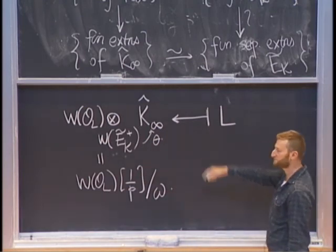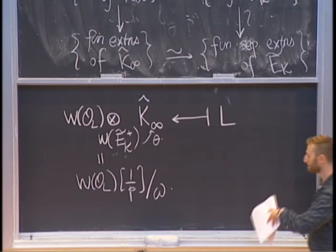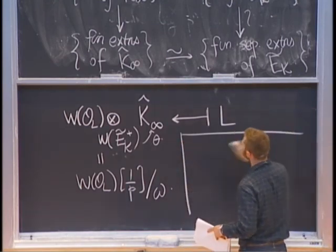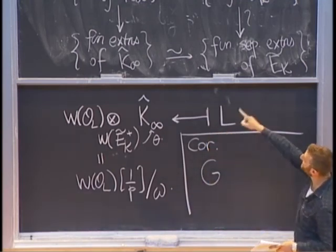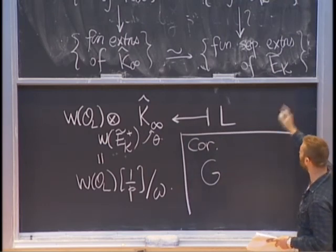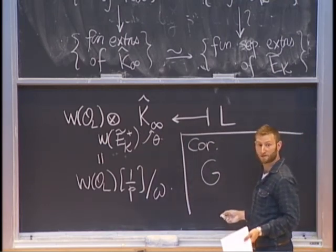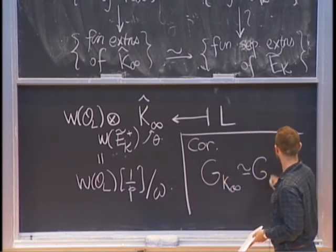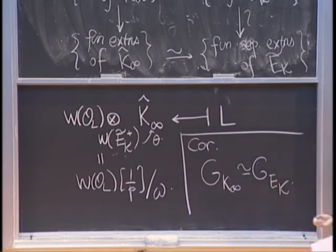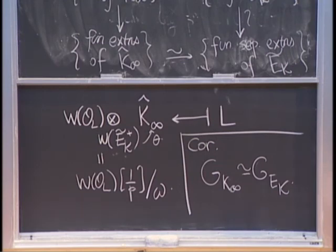As a corollary: if finite extensions of K_∞ are the same as finite separable extensions of E_K, then two Galois groups are isomorphic. So the Galois group of K̄/K_∞ is isomorphic to the Galois group of Ē_K/E_K, which was just a power series ring in one variable over a perfect field. That's the virtue of working with these highly ramified extensions: things become a bit simpler when you go to the top, you pass to the field of norms, and you're in characteristic p.